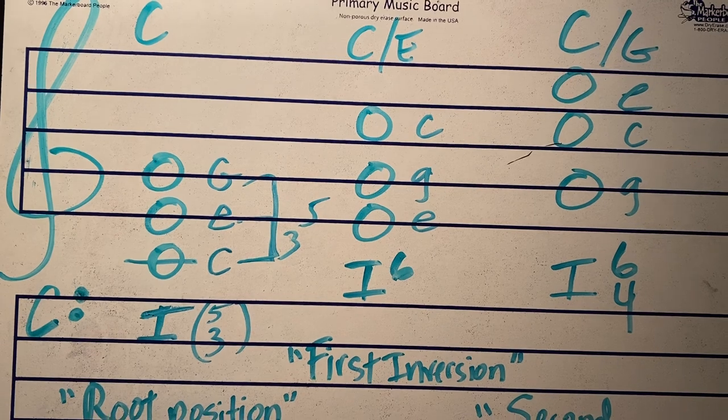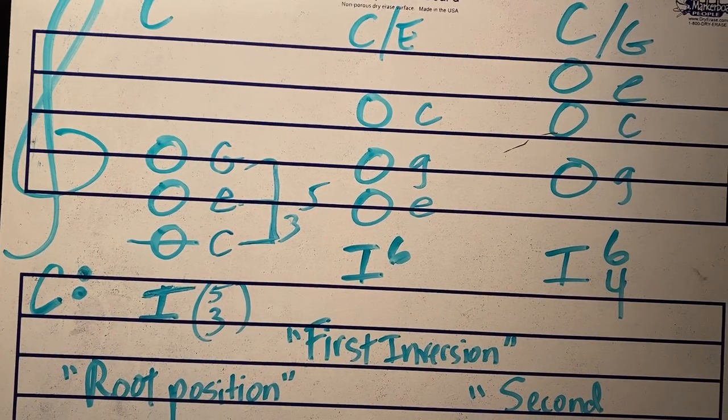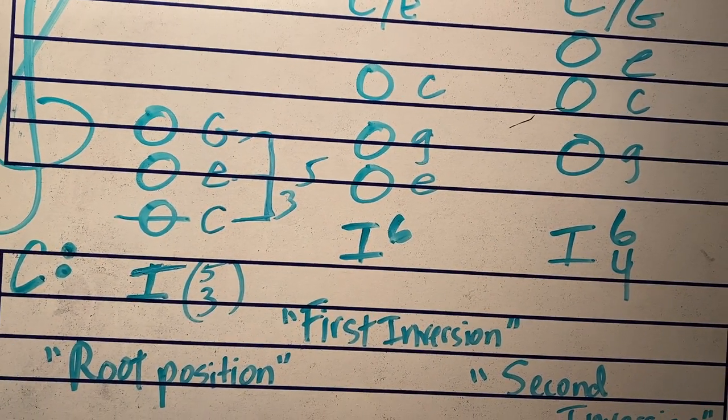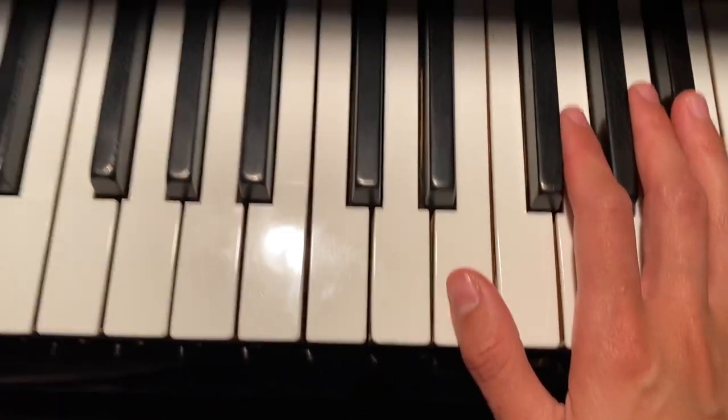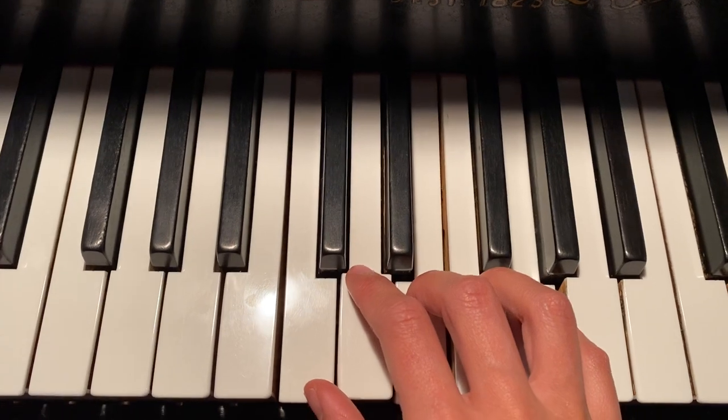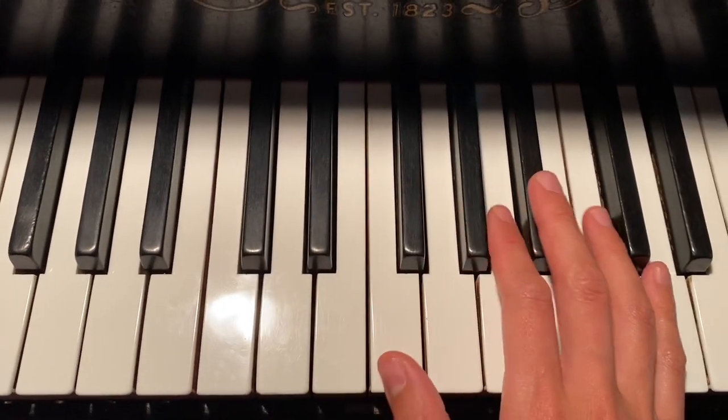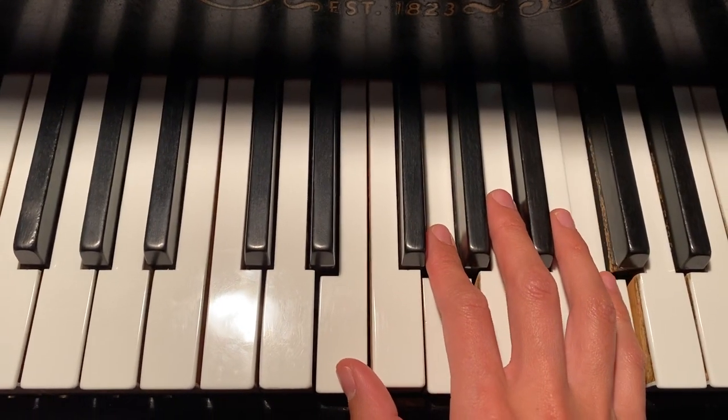So we take a look at a first inversion chord. We're basically using the same notes, C, E, and G, except for the difference is that E is on the bottom. So instead of C, E, and G as our root position triad, we're doing E, G, and C.